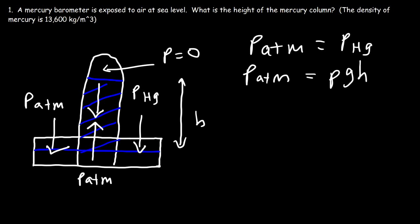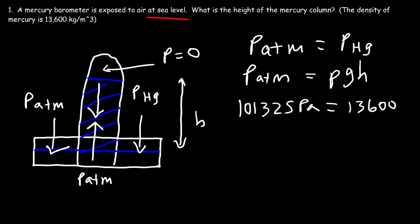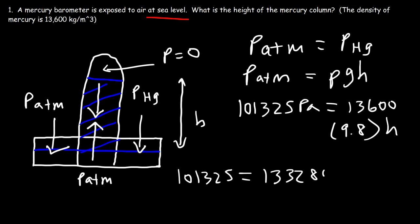Now we have everything needed to calculate the height of the mercury column. At sea level, atmospheric pressure is 1 atm, which equals 101,325 Pascals. That equals rho times g times h. The density of mercury is 13,600 kg/m³, multiplied by g = 9.8, giving 133,280. Dividing 101,325 by 133,280 gives a height of 0.76 meters.